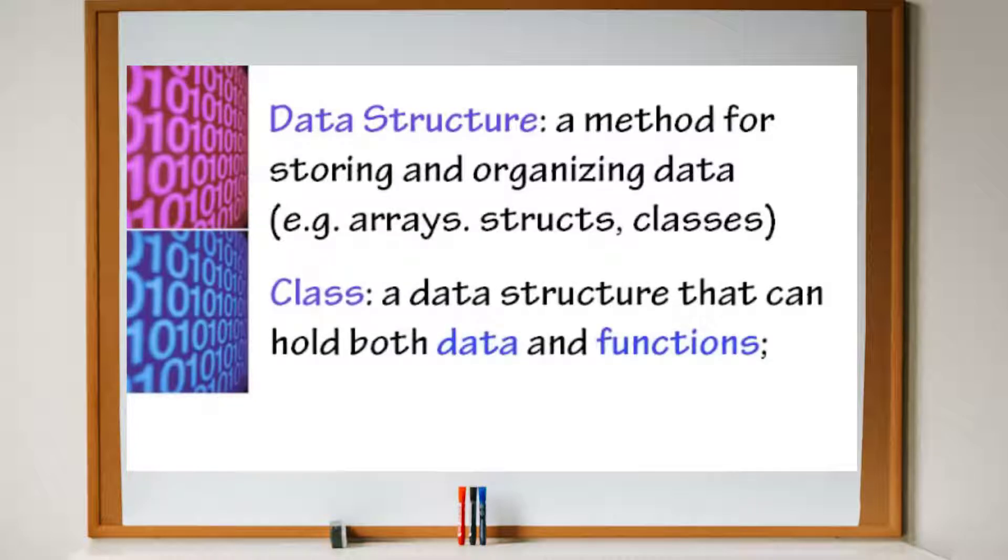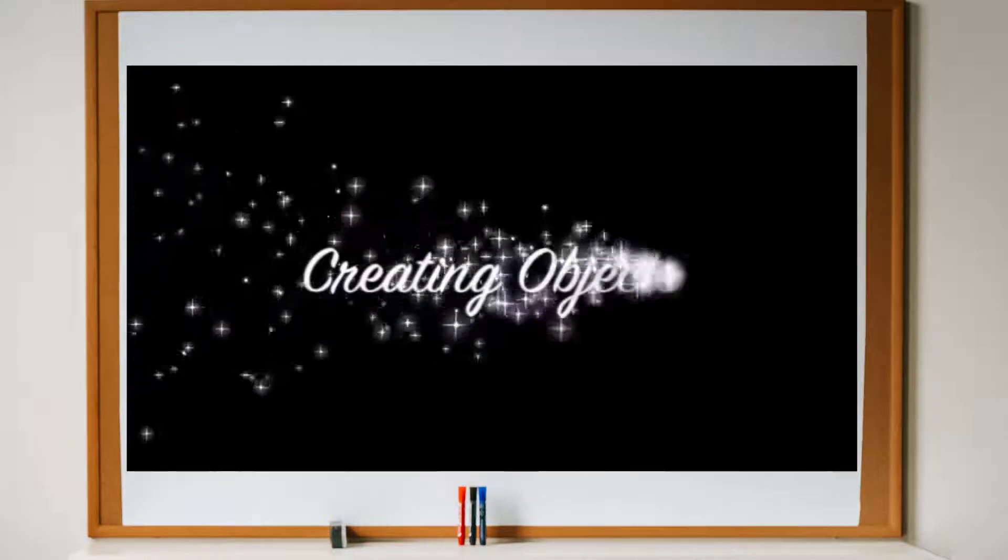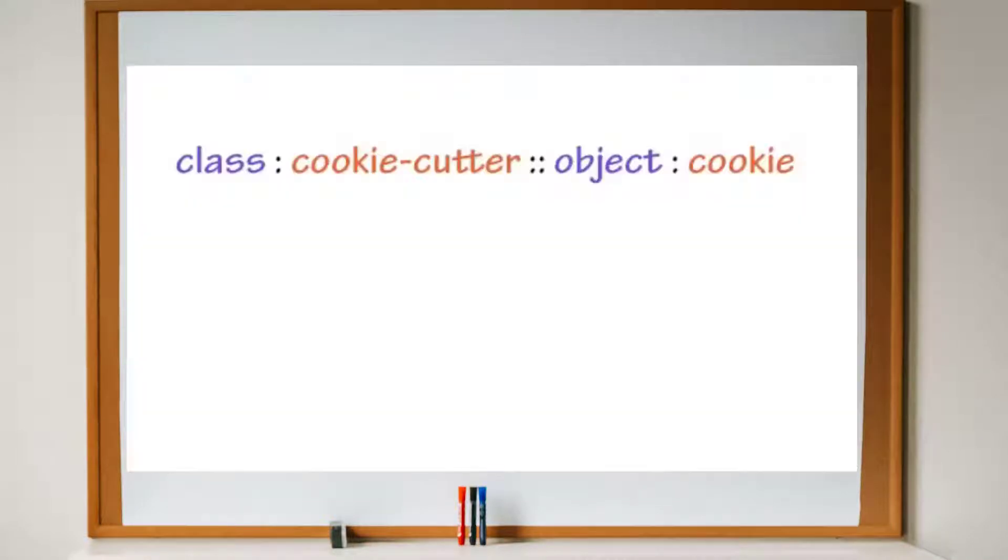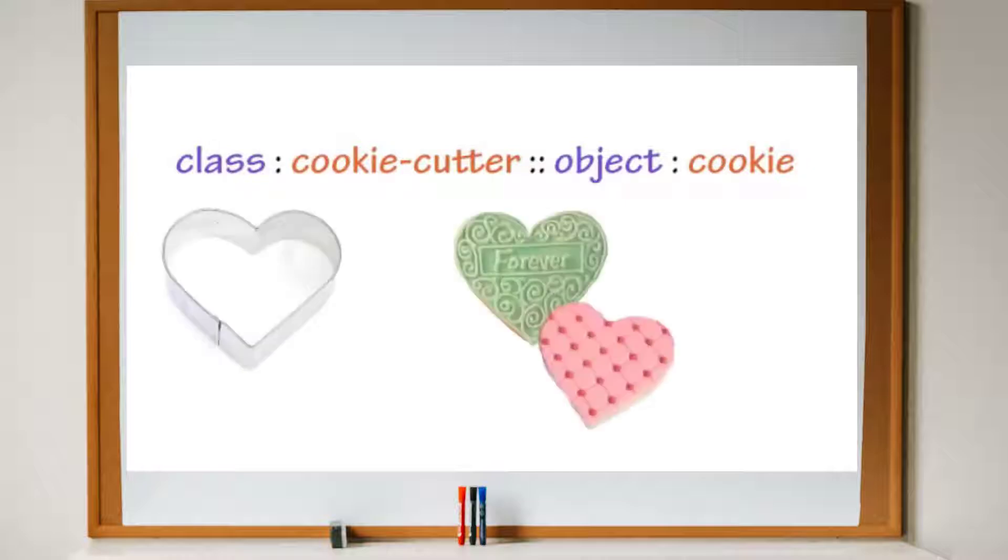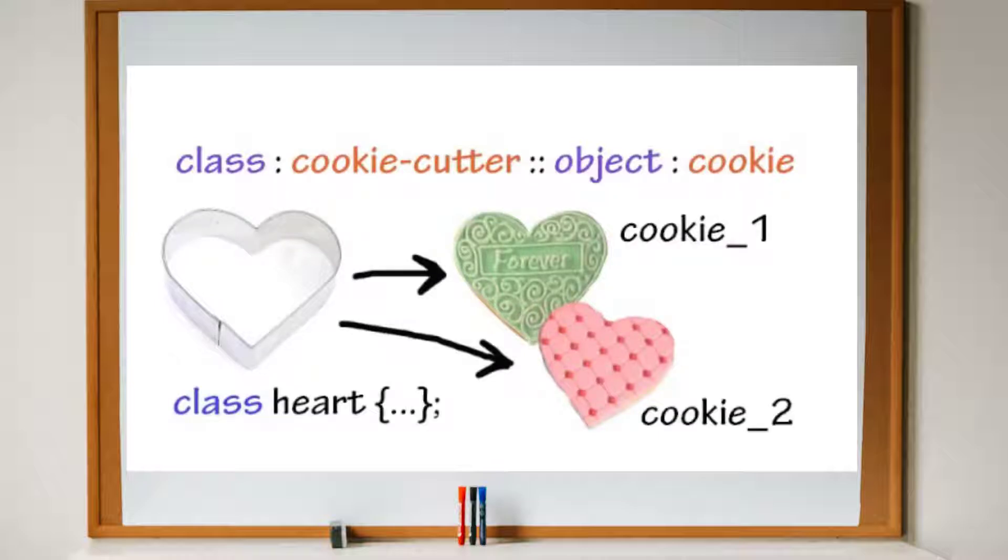A class is a kind of data structure that can hold both data and functions, and data of different data types, unlike an array. You can think of a class as a template for creating objects. The class itself isn't a real object, but the class can produce objects. You can think of it as a cookie cutter creating cookies.